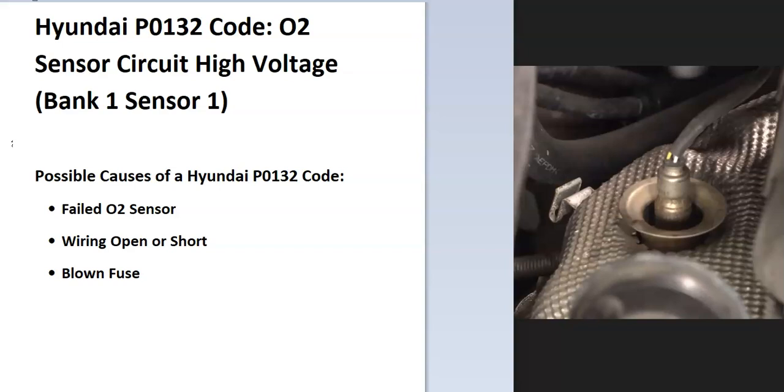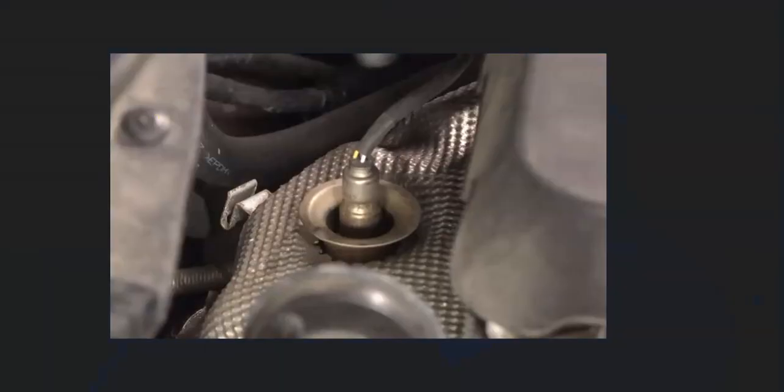Some of the possible causes: well, it could be a bad O2 sensor, it could be in the wiring, and possibly a blown fuse. So the first thing to do when you get this code is to go locate bank one sensor one oxygen sensor.